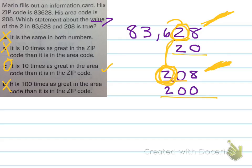So, like we said before, the 2 in 208, or the area code, is 10 times greater than the 2 in the zip code. Nice job.